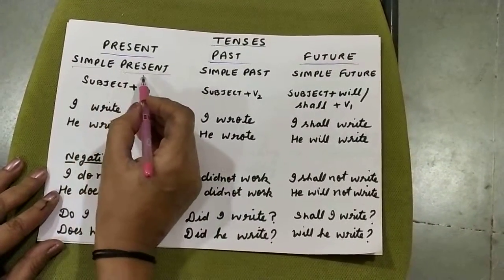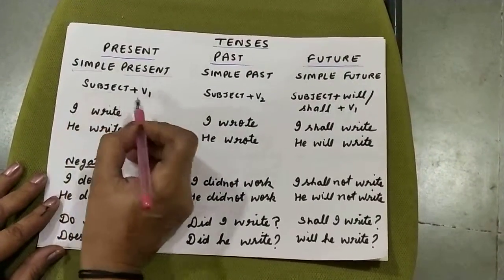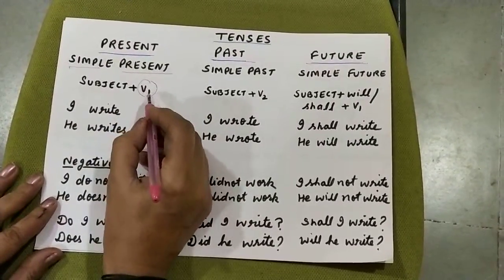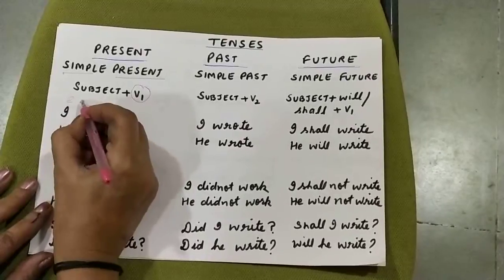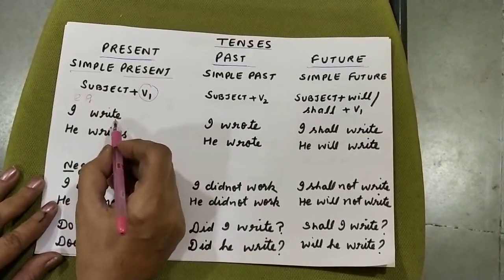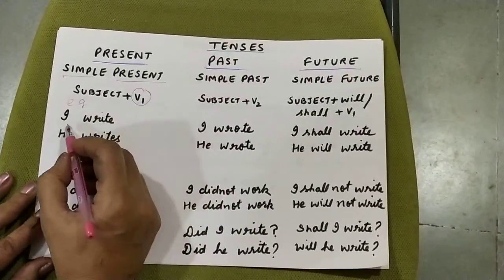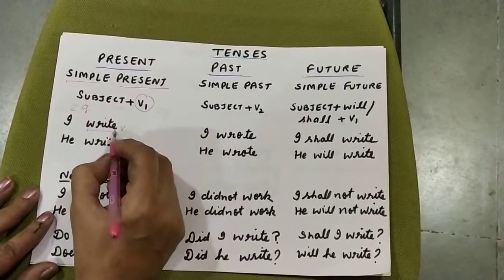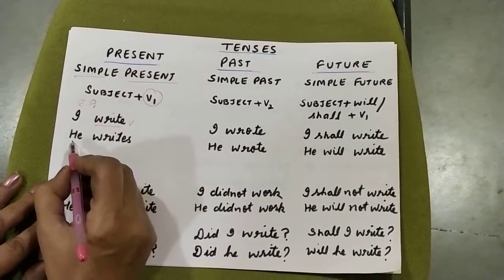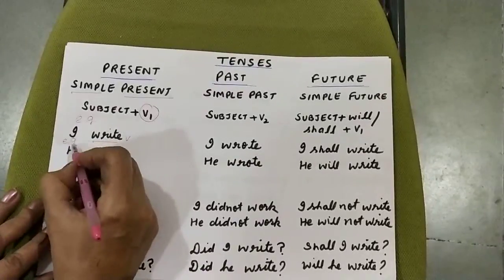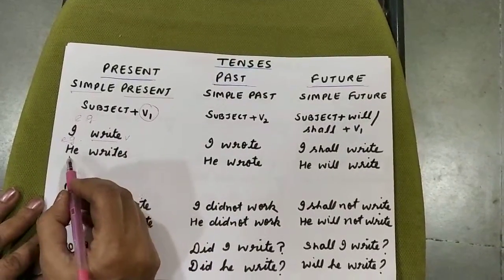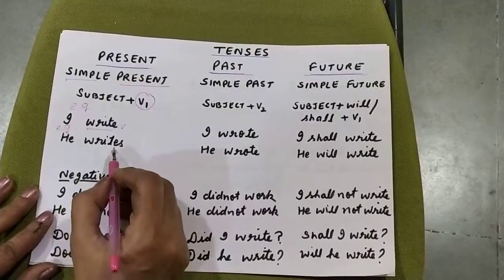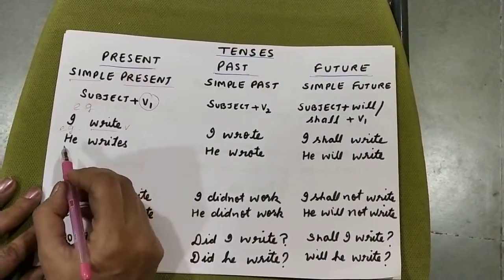In simple present tense we have a subject plus the first form of the verb. For example, 'I write' — here 'I' is the subject and 'write' is the verb, that is the first form of the verb. With 'he writes', this is another example. So we use with he, she, it — when we use the verb, we add 's' to it, because it is a singular verb.